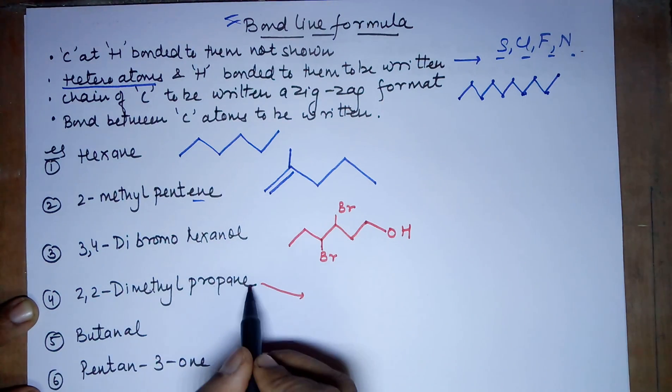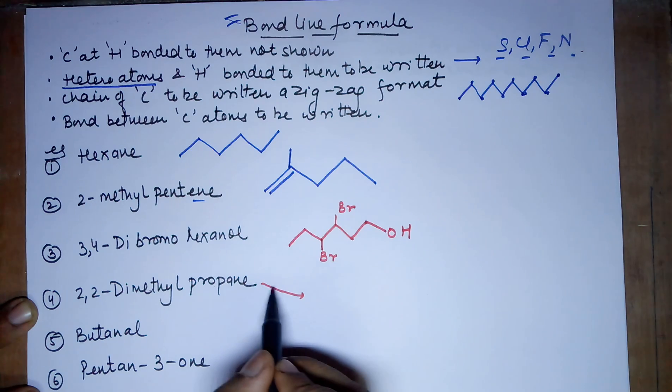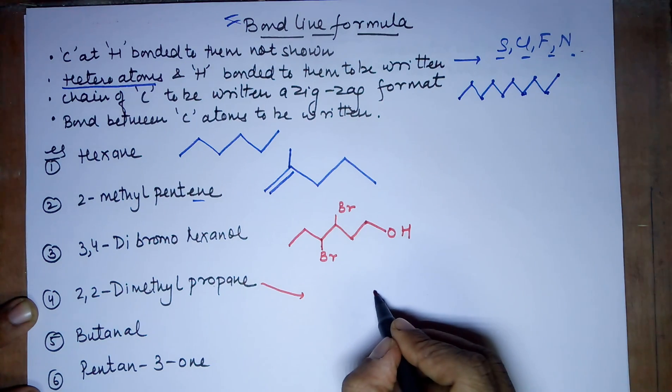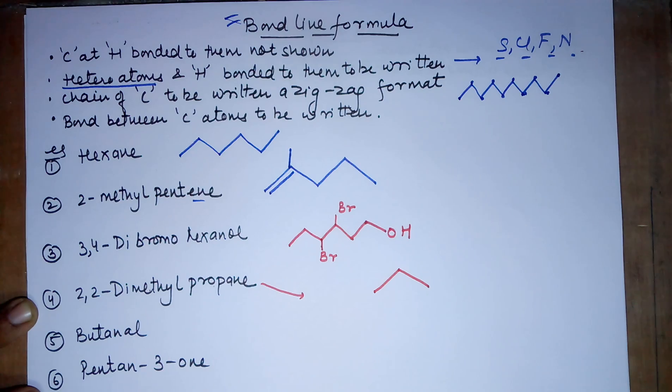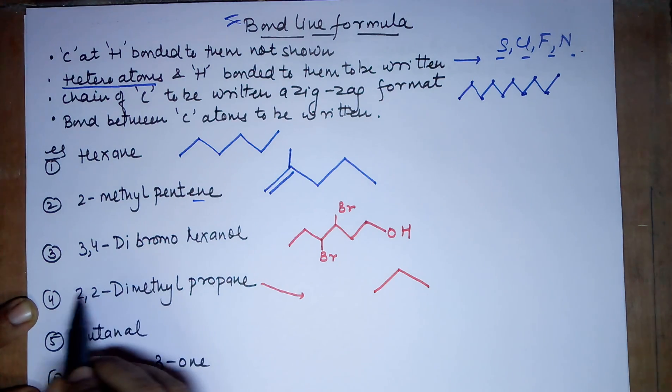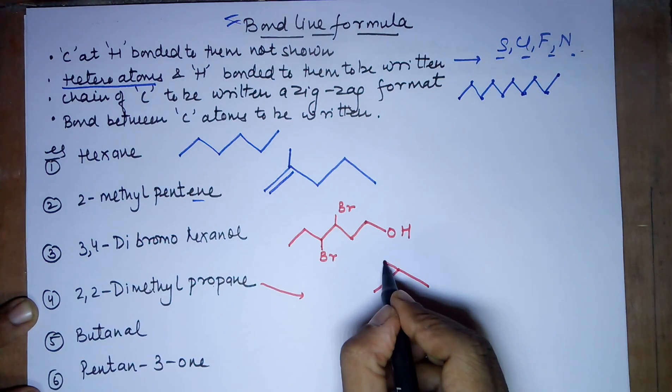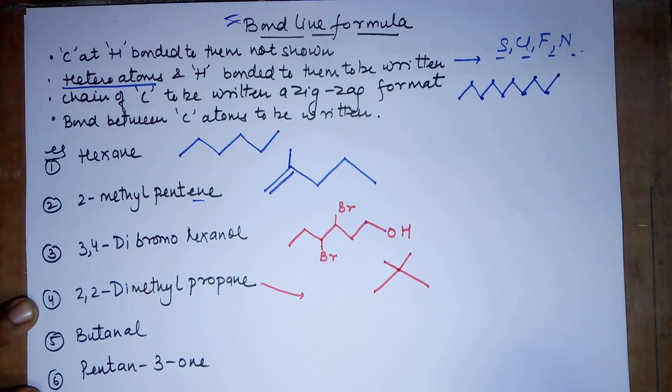2,2-dimethyl propane. Propane means 3 carbons and single bonds. 1 carbon, 2 carbon, 3 carbon. 3 carbons done. The second position has got 2 methyls. 1 methyl here, 1 methyl here. That's the structure.